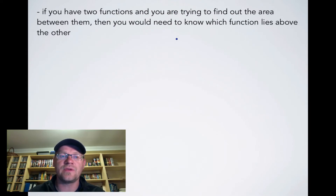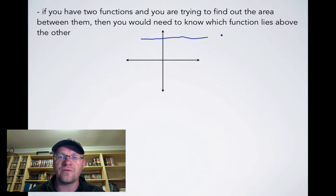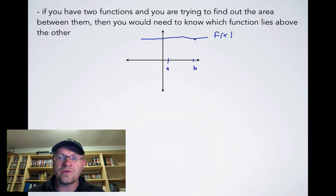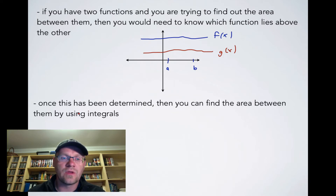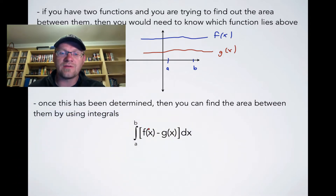For example, if this is our function f of x, and we pick a point a and a point b as our interval, finding the integral gives us the area underneath f of x. But if we're trying to find the area between f of x and another function g of x, we need to subtract g of x from f of x. The formula uses the function above minus the function below, then integrate.